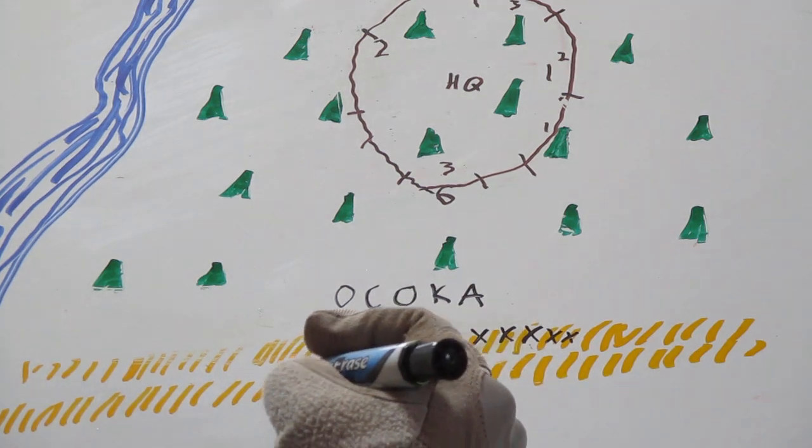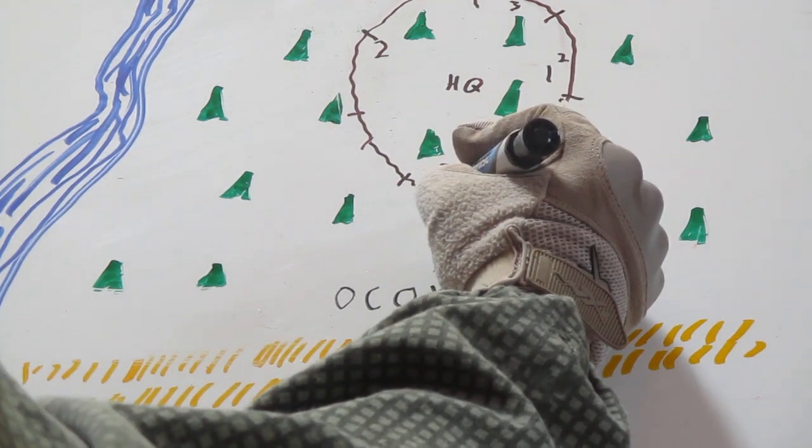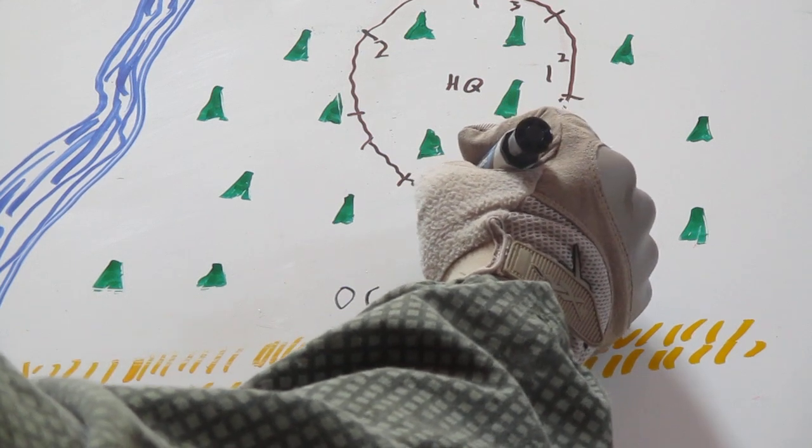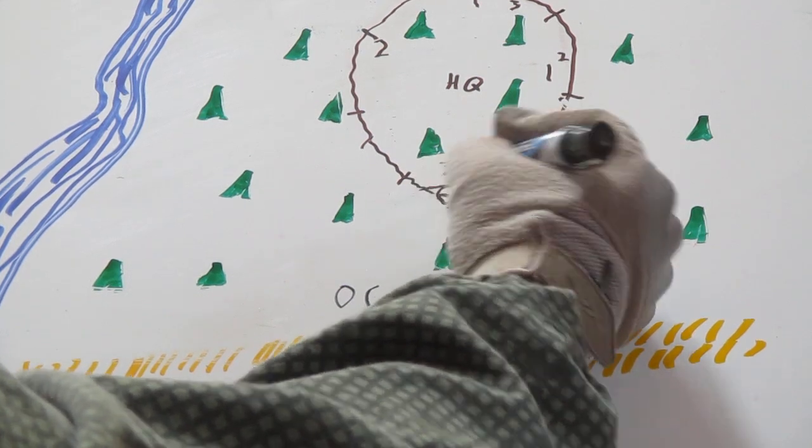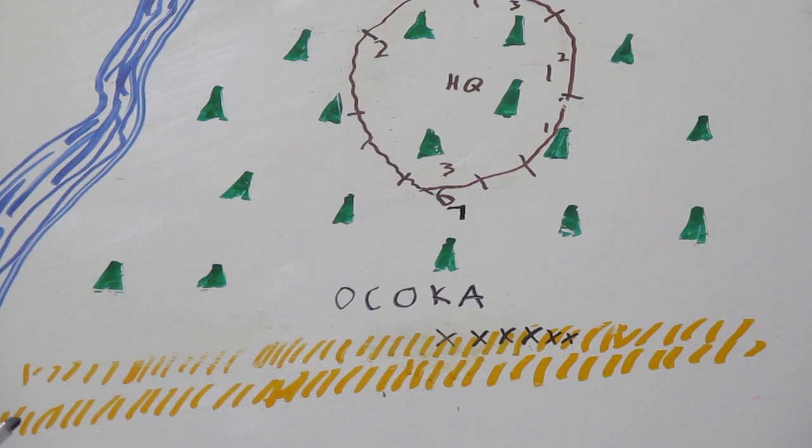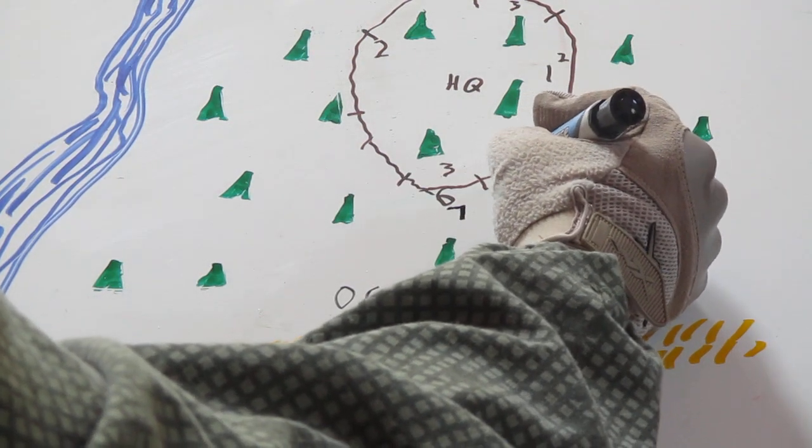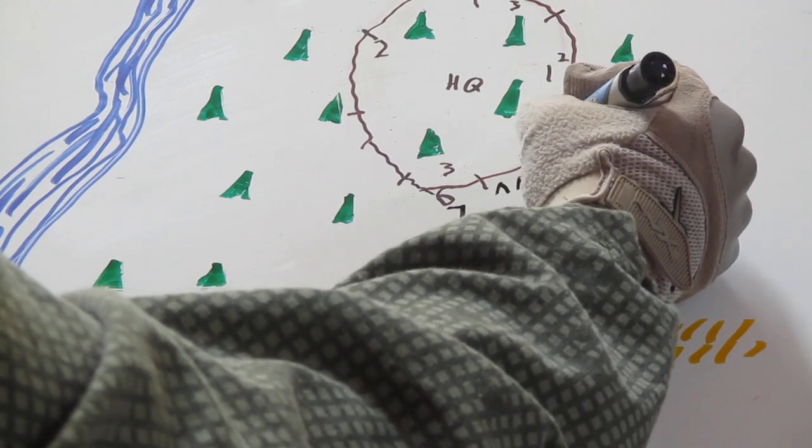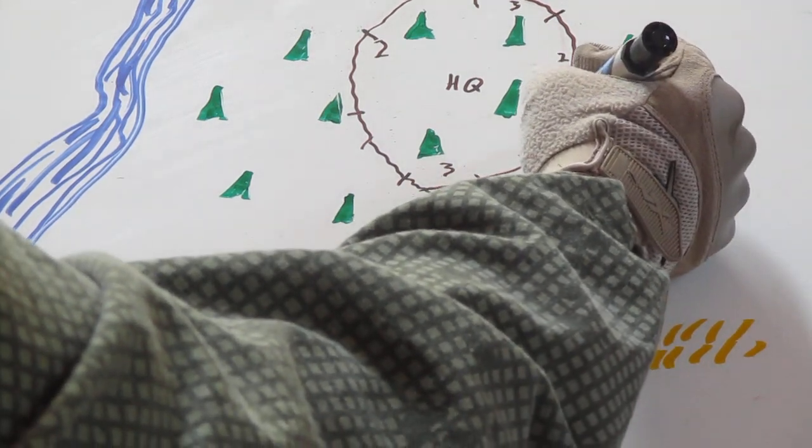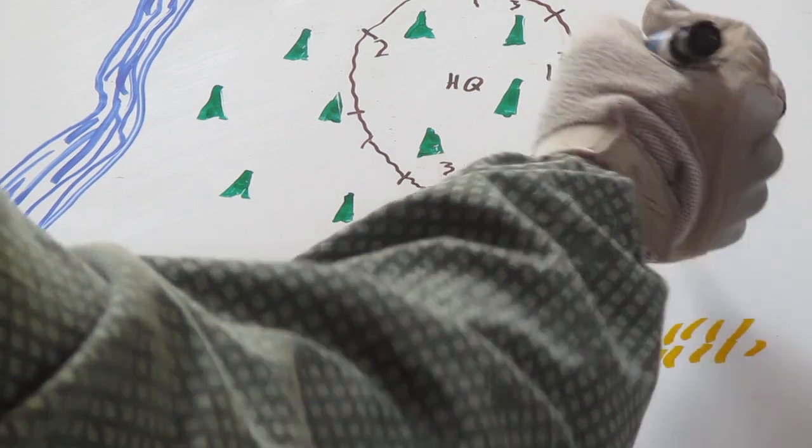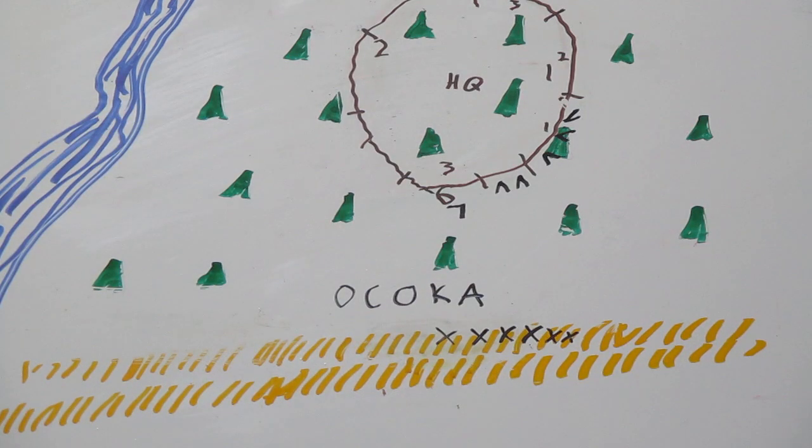So down here at the 6 o'clock, typically we would locate a machine gun team and they would be in an L-shaped position. And then everybody else would be in V-shaped hasties or in foxholes along the perimeter.